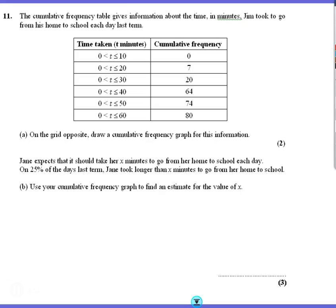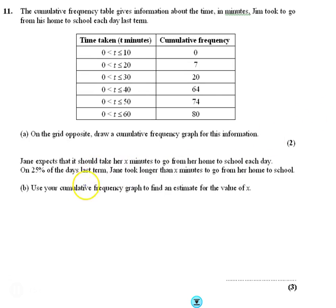Let's go back up. So it's useful as well to draw this on. So we think 39 minutes, if she took longer than 39 minutes, that would be a quarter of the days it took her to get from home to school.